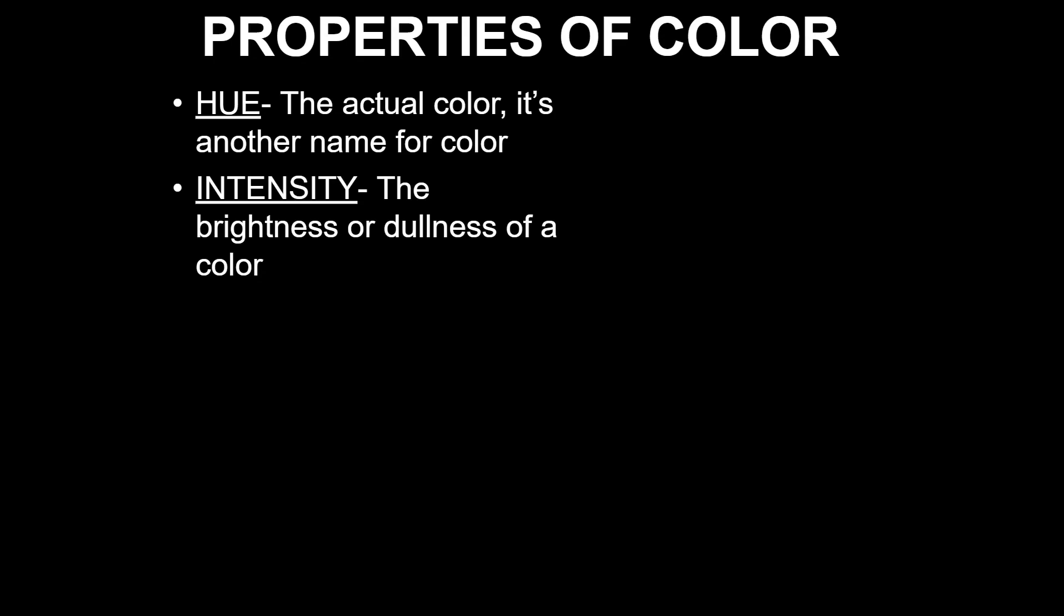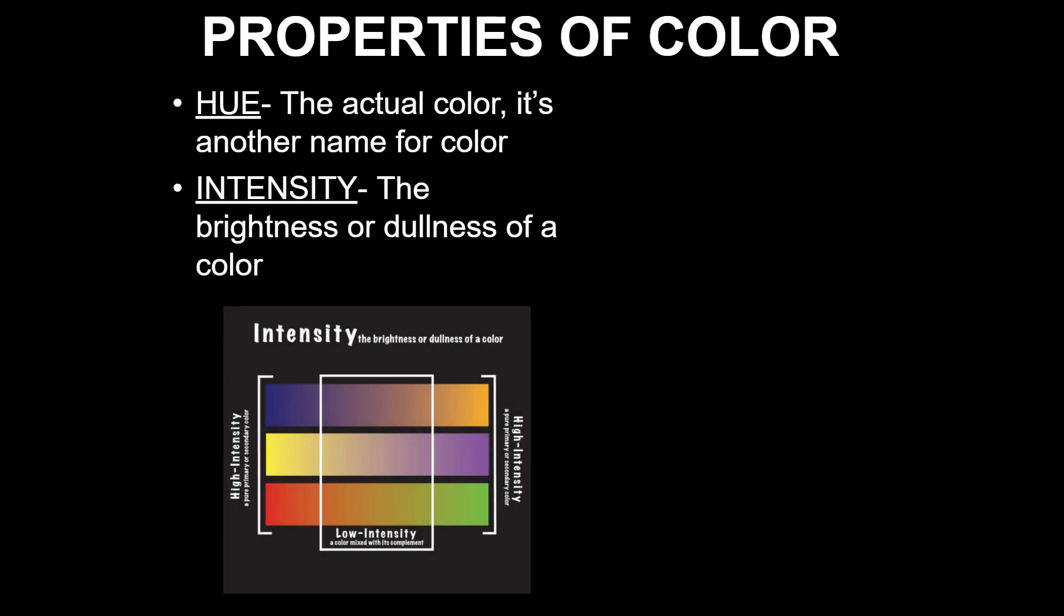What are some properties of colors? We have the hue. What's the hue? It's the actual color, or another name for the color, so the hue of red is red. Intensity: that's the brightness or the dullness of a color. How can a color be intense? Well, we look at this little scale here. We can see a high intensity color is going to have less of its complement mixed in with it, or less gray or less black added. It's going to be more pure. We see this bright orange on the right on the top of the scale. If you add blue to it, it's going to get less intense.